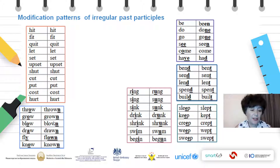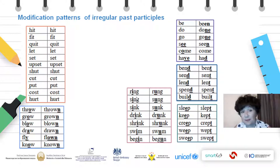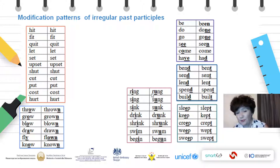Fly is put in this group because the past participle looks like the others in this pattern. And then we have ring — rung, sing — sung, drink — drunk, et cetera. What happens here? The vowel I turns into U, and it's pronounced as a short U sound: ring, rung.